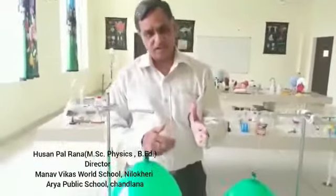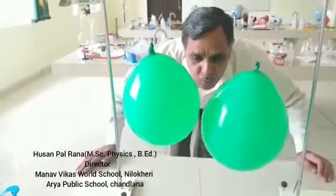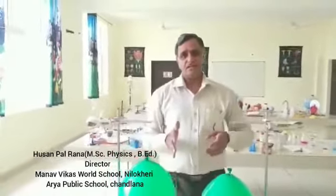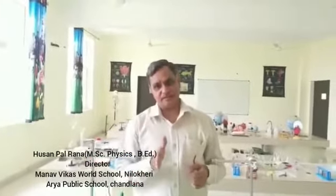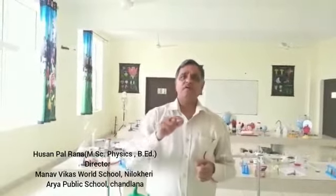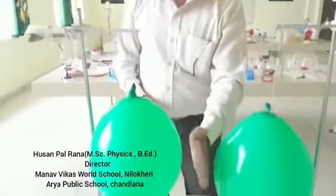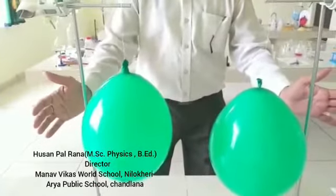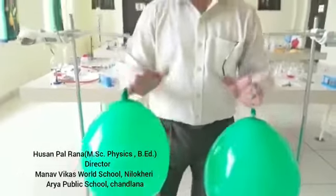The first activity was regarding two balloons. I blew air between them and they came closer to each other. The reason is that when air blows in a particular region, the air pressure in that region decreases. In the surrounding area, air pressure is higher, so the balloons are pushed from high air pressure to low air pressure — and that's why they come closer to each other.